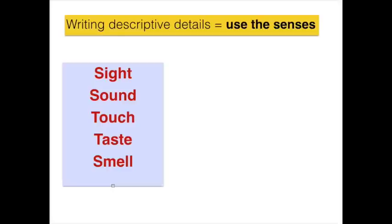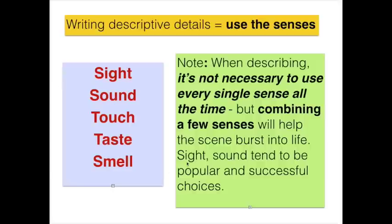When writing descriptive details, we need to use the senses of sight, sound, touch, taste and smell. But it's worth remembering that it's not necessary to use every single sense all the time. Combining a few senses will help the scene burst into life. Sight and sound tend to be popular and successful choices, and after those, maybe choose one or two of the others.